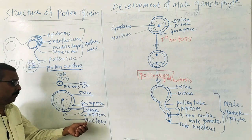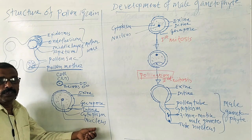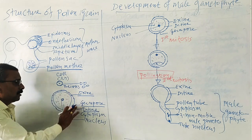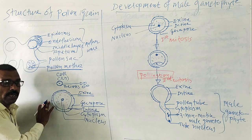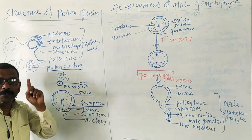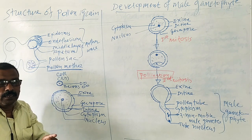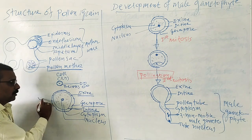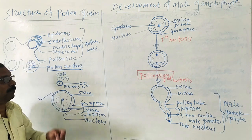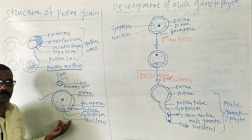Inside the intine there is cytoplasm and a nucleus. The nucleus is haploid. Thus each pollen grain is a unicellular, uninucleated, haploid structure, produced from pollen mother cells by meiosis cell division.